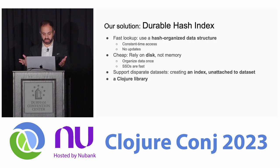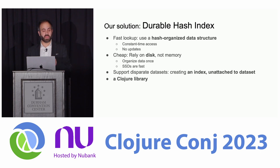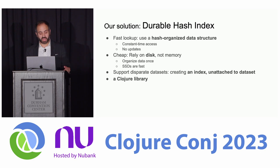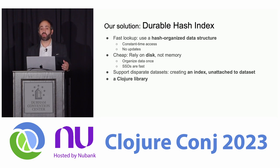So we came to a solution. Rich designed this solution. We call it the Durable Hash Index. It gets fast lookup by using a hash-organized data structure like Clojure Maps, so it's constant-time access. We don't support updates. It relies on disk, not memory, so it's cheap. Allows us to organize the data once. We have SSDs which are super fast. And we support all our use cases by creating an index that is unattached to the data set — it is disconnected, it is elsewhere. We do this all in a Clojure library.